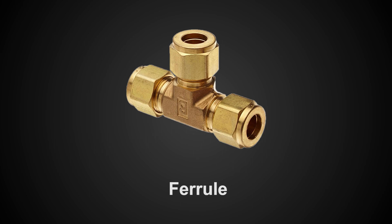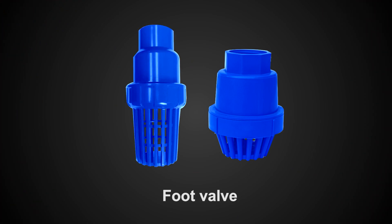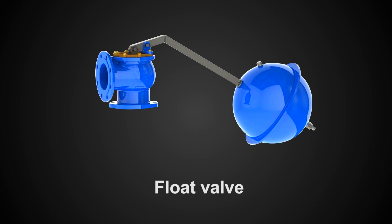Ninth one: ferrule. It is used for connecting a service pipe to the water main. Tenth one: foot valve. It is a valve used in a pump, also called a check valve, as it makes sure that the pump is ready to use. Eleventh one: float valve. It is used for stopping water when the water tank or flush toilet is filled so that it does not overflow.